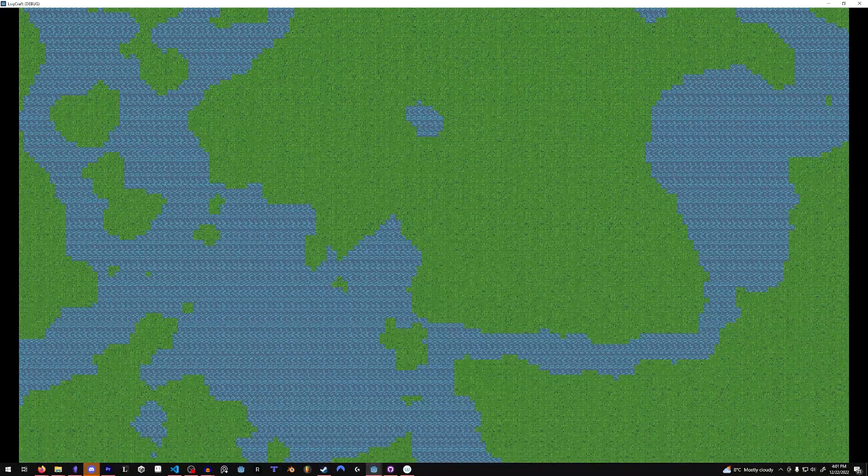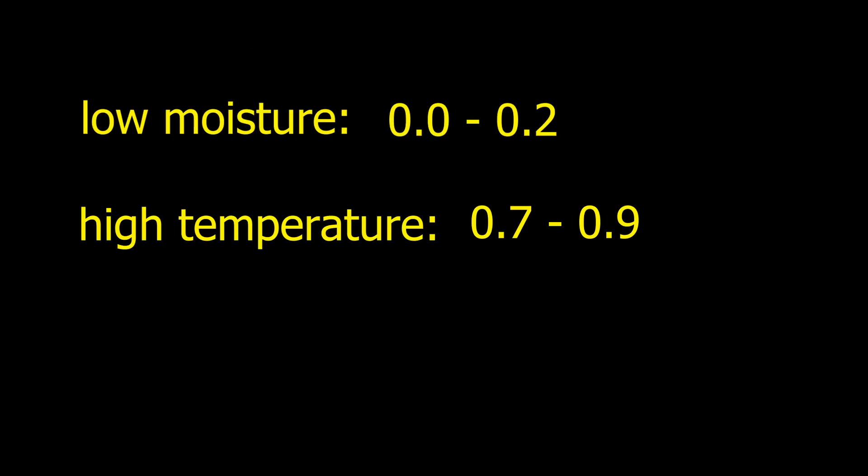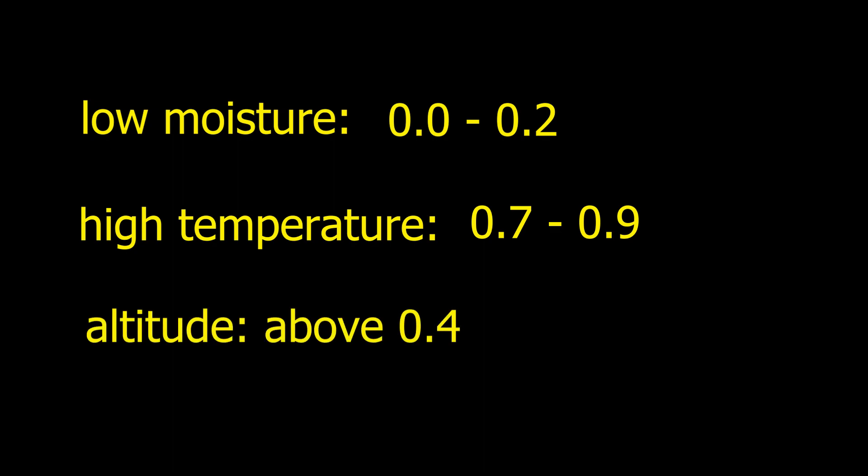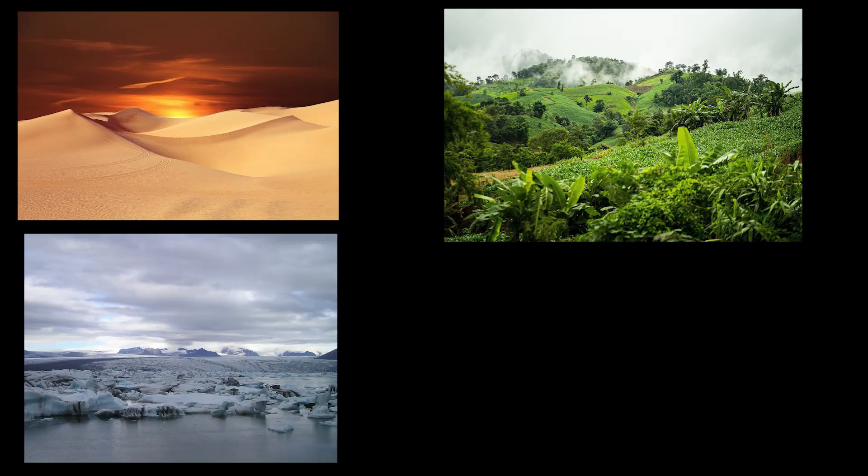I'm also generating two different noise maps — one for moisture and one for temperature — so I can create different biomes. For instance, if the moisture is very low, like 0 to 0.2, and the temperature is very high, 0.7 to 0.9, and the altitude is above 0.4, make it a desert. And we slowly fill in the gaps with different biomes.